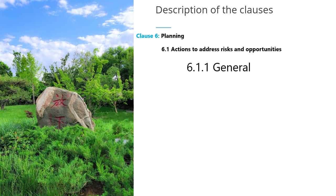Class 6 is about planning. It has two subclasses: class 6.1, which is actions to address risks and opportunities, and subclass 6.2, which is OHS objectives and planning to achieve them.